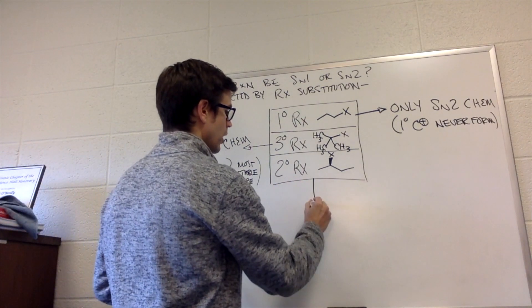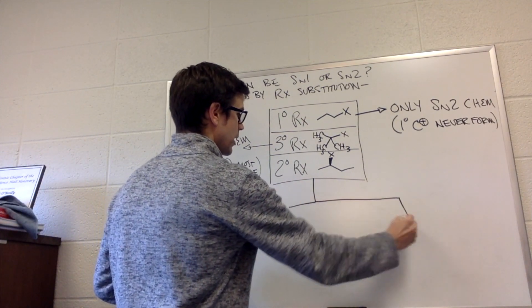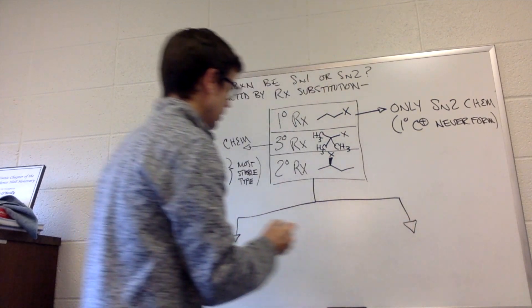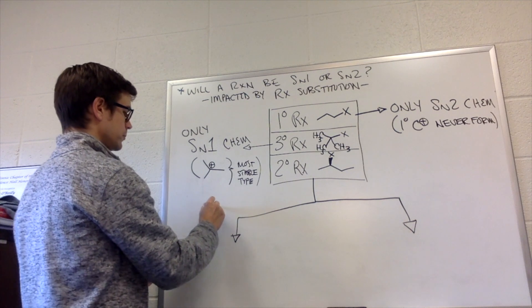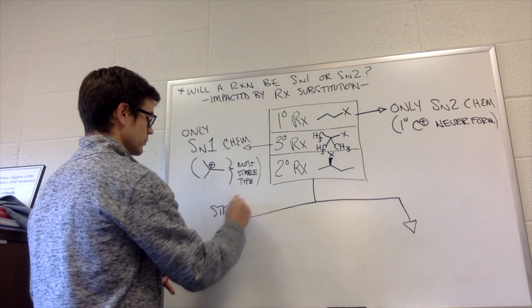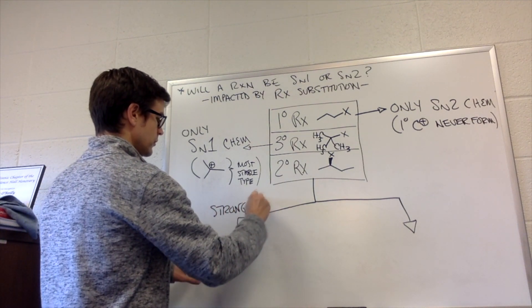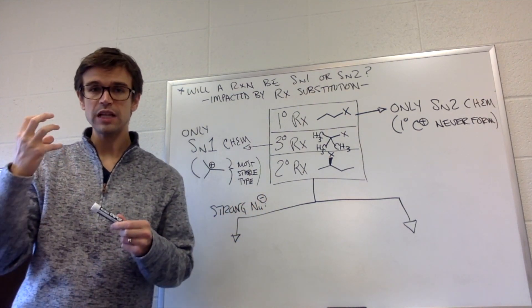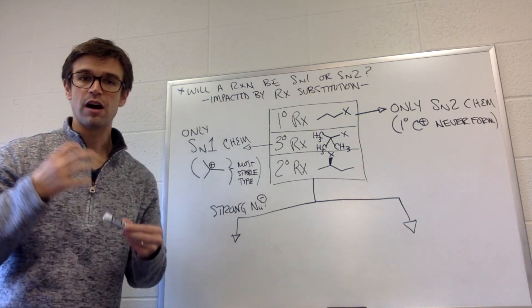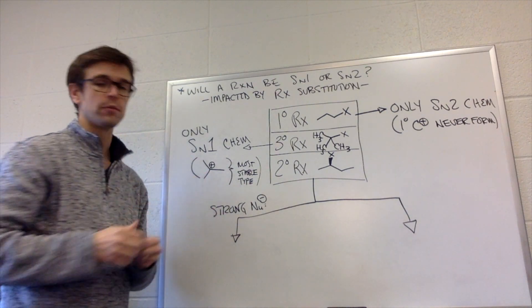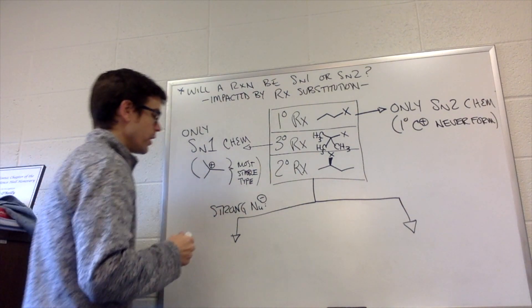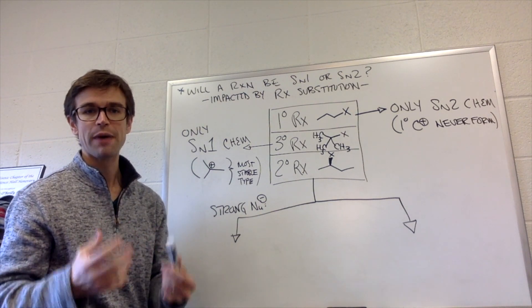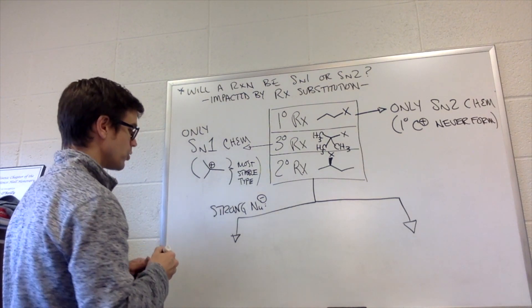So essentially, we can break that into two sides. If we have a strong nucleophile, strong nucleophiles don't wait around. They are reactive. They want to react with the molecule fast. So if we have a strong nucleophile, it's going to make the process bimolecular because it does not want to wait around.